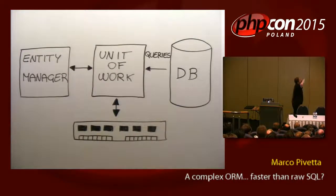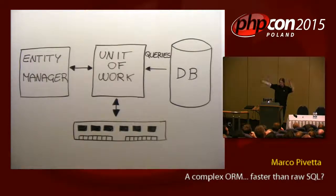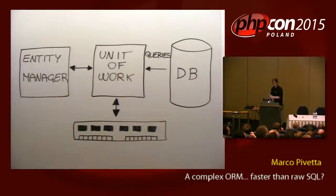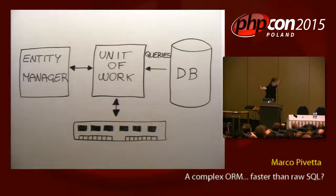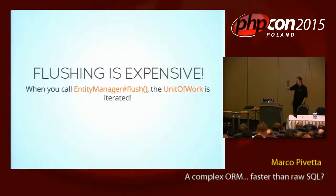This is pretty much what happens behind the scenes. You have the entity manager, then in the middle the unit of work, and then the database. The unit of work is between you and the database — it keeps everything that you did in memory and keeps track of all what you are doing. It prevents you from saving things that don't need to be saved, and it prevents you from loading things that don't need to be loaded. But when you want to save, what happens is that this unit of work — everything in it — is going to be traversed top-down and it's going to check everything. This is the flush operation. The entire unit of work is read top-down and it's going to check: did this change, did this other thing change, and so on.